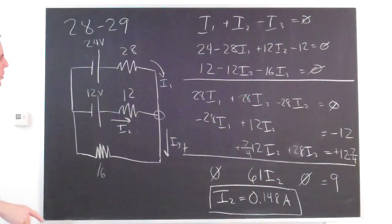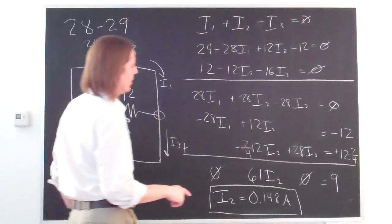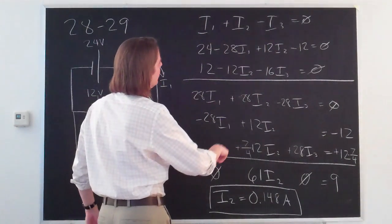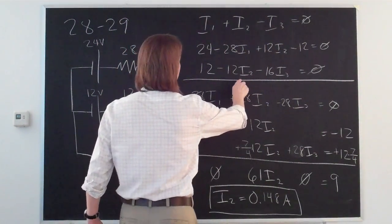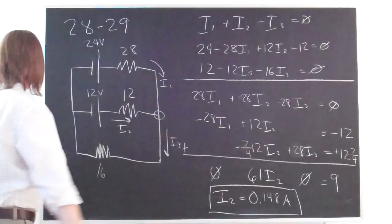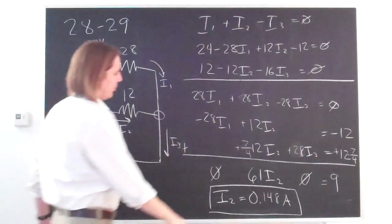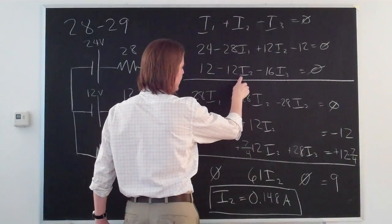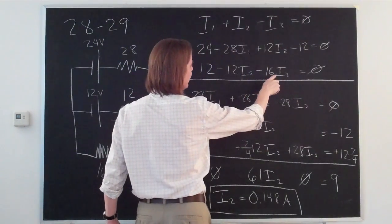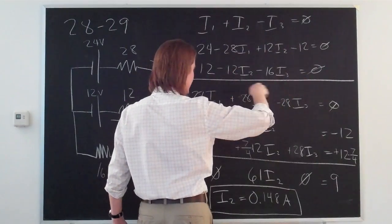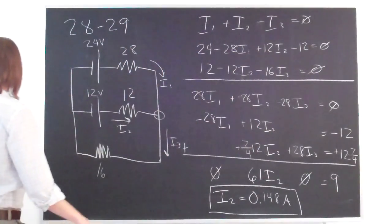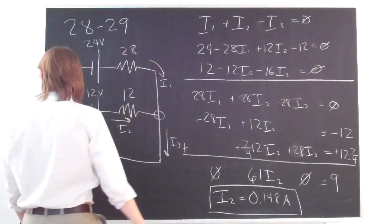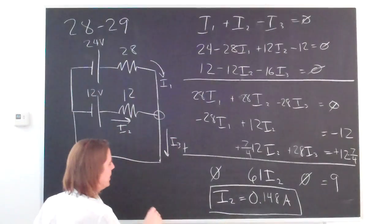Once we know I2, we can quickly start to find the other ones. We can come up here where we just had something in terms of I2 and I3. And we can plug 0.148 into here. And then we have a number here. And we have 16I3 there. So you multiply that, take it over, divide it by 16. I'm not going to do the little algebra for you. And you find that I3 is 0.639 amps.